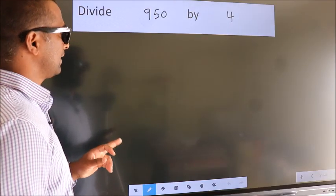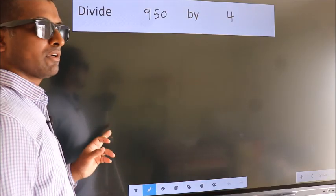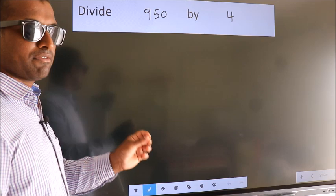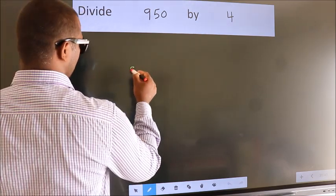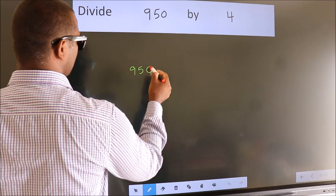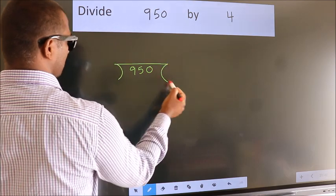Divide 950 by 4. To do this division, we should frame it in this way: 950 here, 4 here.